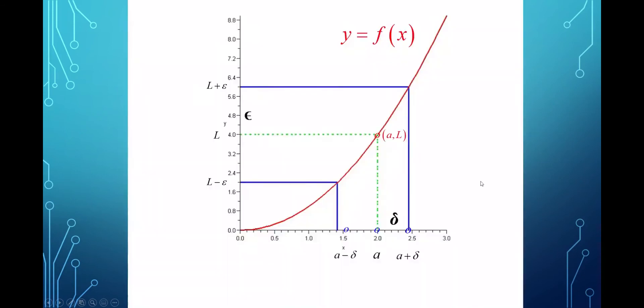then the function value will be in the interval from l minus epsilon to l plus epsilon. Let's try to picture that. I've got here a picture for a special case I'm going to look at in just a minute, but I also overlaid it with some labeling to correspond to the definition we just looked at.